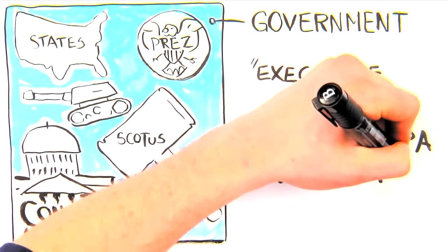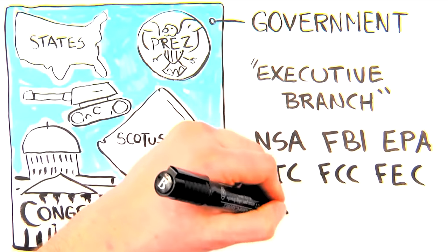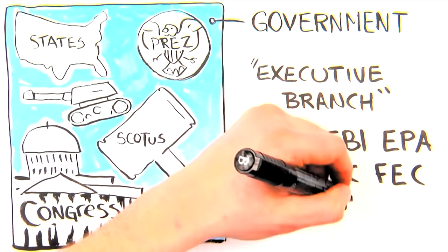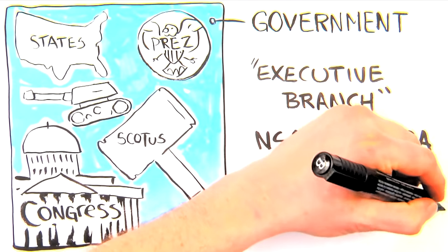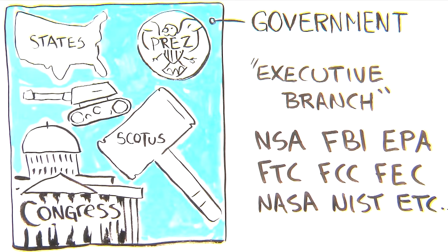Agencies are most of the things in the government whose name is a jumble of letters, like the NSA, the FBI, the EPA, NASA, FTC, ATF, DOJ, DOE, etc.